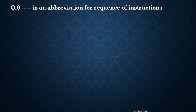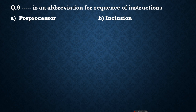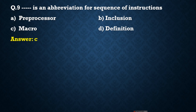Next question: A dash is an abbreviation for a sequence of instructions. Options are: A) preprocessor, B) inclusion, C) macro, and D) definition. The correct answer is C, macro. A macro is an abbreviation for a sequence of instructions.